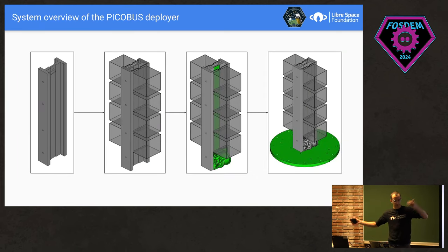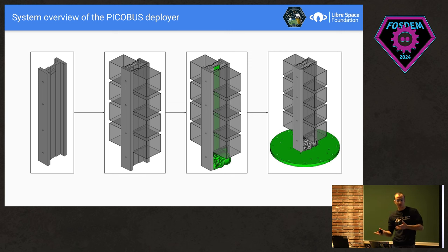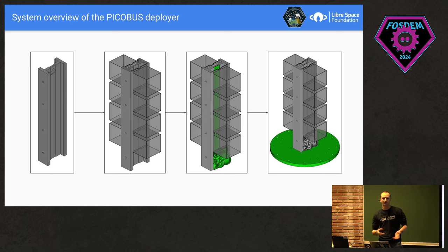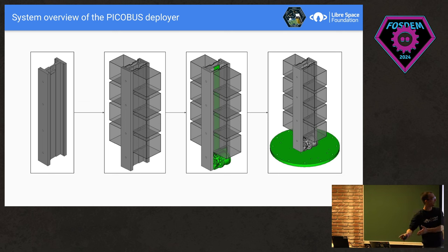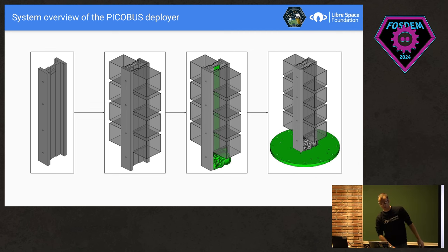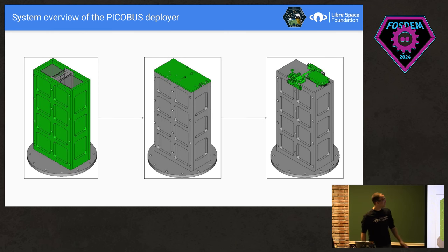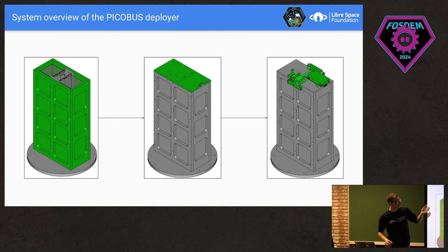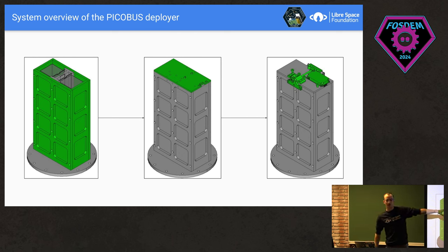How do you start designing a deployer? That's a really tricky question. For us, we knew we wanted to house eight P units — eight of the cubics you can see. I'll do a quick walkthrough of the internals of the PicoBus for context. You start with a rail, place all the satellites on it, then push the satellites outside with some kind of spring. You need all these things mounted on the rocket via a flange, then close everything and add a door to keep the satellites inside. You also need a locking mechanism and deployment mechanism. That's the final version of the PicoBus V1.